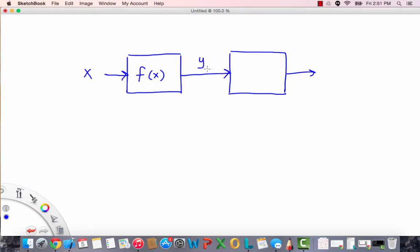We want to pass y into another box that performs some sort of operation on y in such a way that we get back what we started with, which is x. x goes in here, x comes out here.